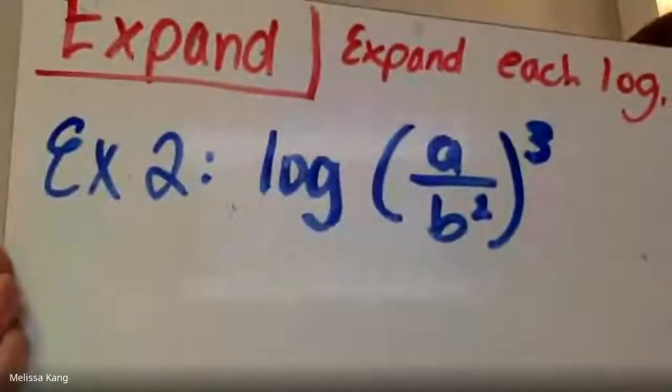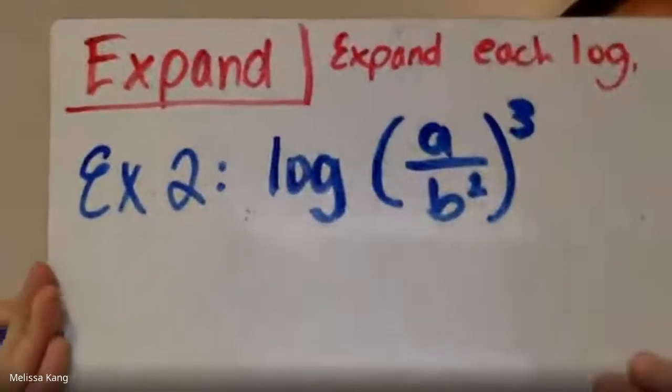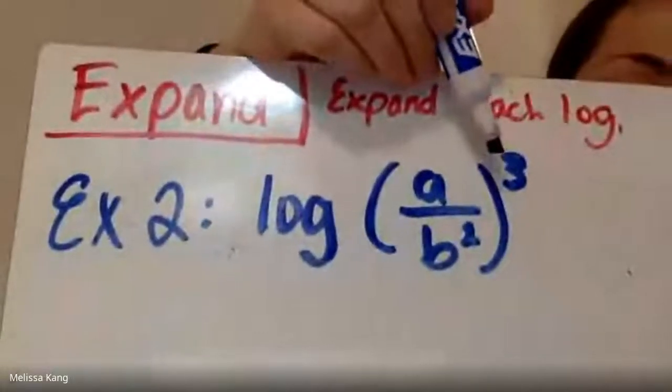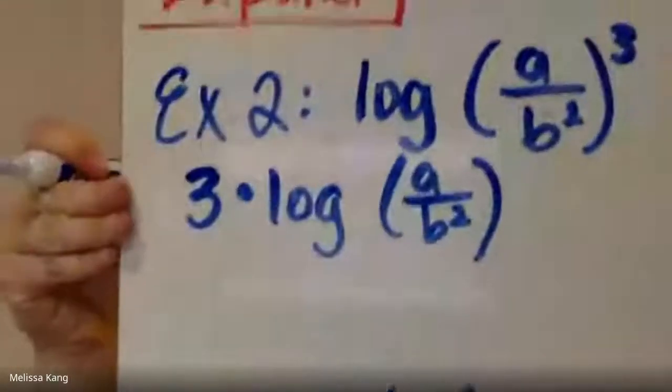This would be example two, and I'm going to write it with you. I think that we learn by watching it happen, watching the magic. So we have log of a over b squared, and then cubed is on the outside. Example two, we're expanding, expand the log. So I want more than one log here. The first thing I have to deal with is that three, that exponent, so I'm moving that in front. So I have three times log a over b squared.